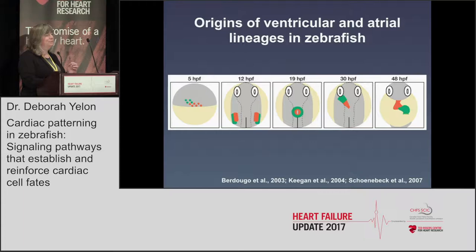Through fate mapping studies, we've previously shown that ventricular and atrial lineages separate very early. They're spatially organized — even prior to gastrulation, ventricular and atrial progenitors have a distinct spatial layout. That spatial organization is maintained as cells gastrulate and come to reside in the heart fields. And even before the heart tube forms, there are already molecular distinctions between the ventricular and atrial myocardium, with distinct gene expression programs already visible as cells move toward the midline to begin assembling the heart tube.